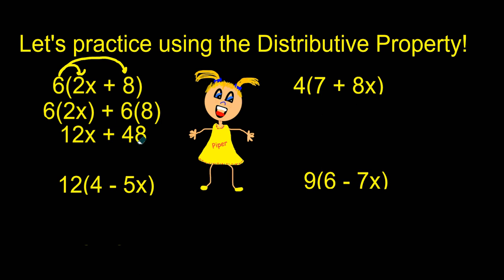That is our simplified expression. We can't simplify it anymore because 12x is a variable term and 48 is a constant so we cannot combine them because they are not like terms. Go ahead and try to solve these other three problems and then see how you did. All right let's see how you did. First of all did you draw the arrows? Again I would encourage you to draw those arrows. We should have distributed multiplication by 4 to both terms in parentheses. 4 times 7 is 28 plus 4 times 8 is 32 and then we've got our variable x.